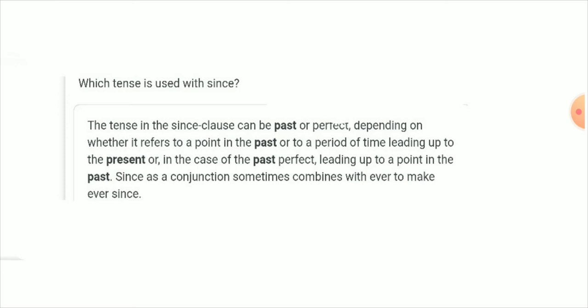Now it comes to what tense is used with since. The tense in the since clause can be past or perfect, depending on whether it refers to a point in the past or to a period of time leading up to the present, or in the case of the past perfect, leading up to a point in the past. Since as a conjunction sometimes combines with ever to make ever since.